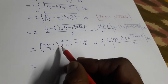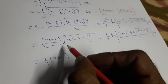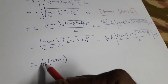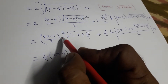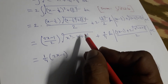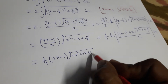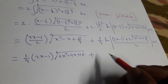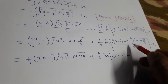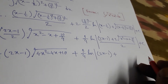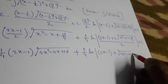We multiply numerator and denominator both by 2, so the denominator becomes 4. We take the factor of 2 inside the square root sign, so it becomes √(4x² - 4x + 10). Similarly for the log term, taking 2 inside the root gives √(4x² - 4x + 10), resulting in 4x² - 4x + 10 under the root.